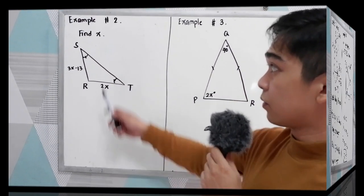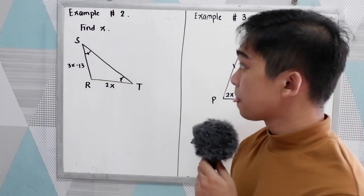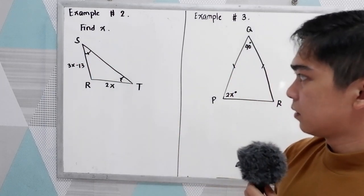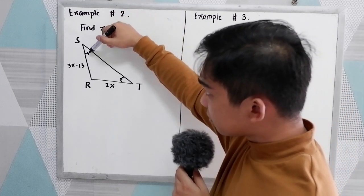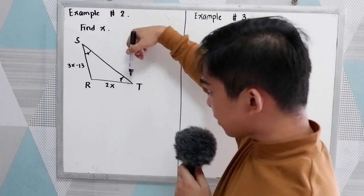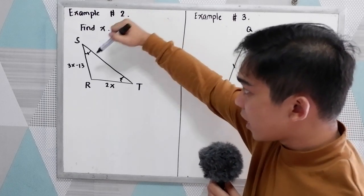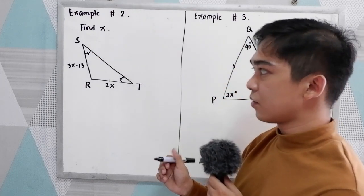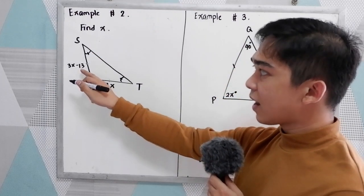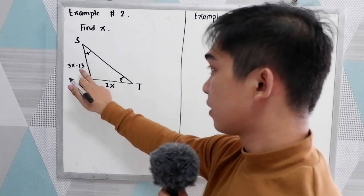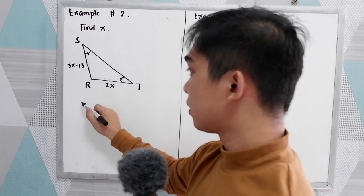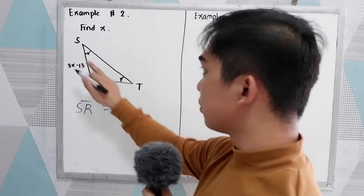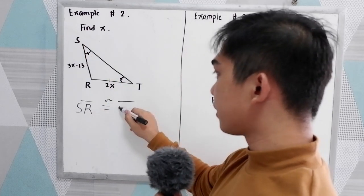Our next example. We're going to find X. So given the triangle RST. So our base angles, angle S and angle T are equal. And we have the legs. We know that legs of an isosceles triangles are congruent. So we have SR is congruent to RT.